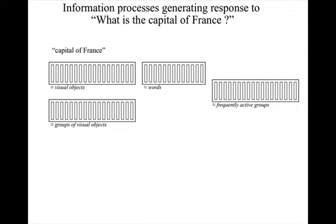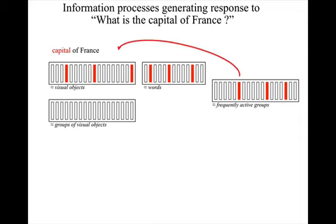So what happens when the words 'capital of France' are heard? The word 'capital' results in columns directly activated in the area that discriminates between words. The group of auditory columns result in receptive field detections in the discriminates-frequently-active-groups area, and those columns drive indirect activation of columns in the area that discriminates visual objects.